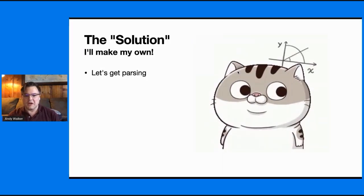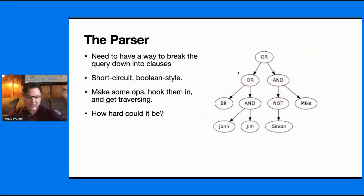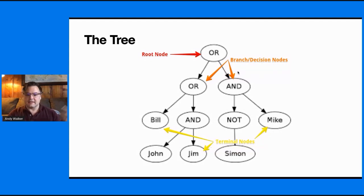So the solution, I'll just make my own. Why not? Let's get parsing. So talk about a parser. I would like to have a way to break down a query into these individually testable clauses, Boolean style short circuits. Make some operations, hook them in, get traversing. How hard could that be? Here's our tree, right? You got your root node. It points down into the deeper nodes of the tree.